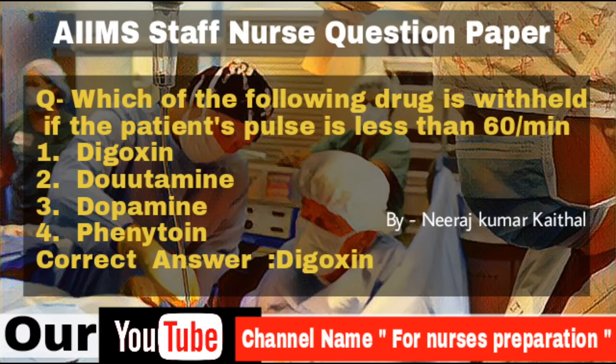Question: Which of the following drugs is withheld if the patient's pulse is less than 60 per minute? Options: Digoxin, Dobutamine, Dopamine, Phenytoin. Answer is Digoxin. Digoxin is a cardiotonic glycoside obtained mainly from Digitalis lanata.